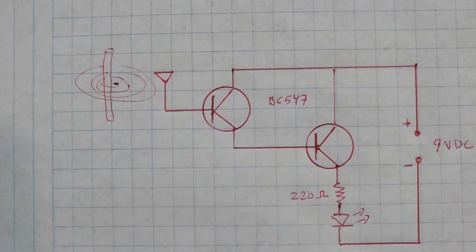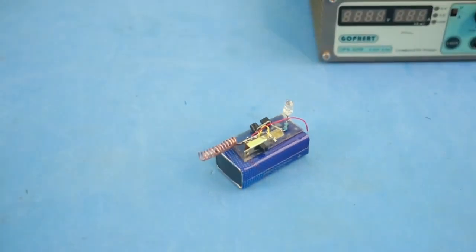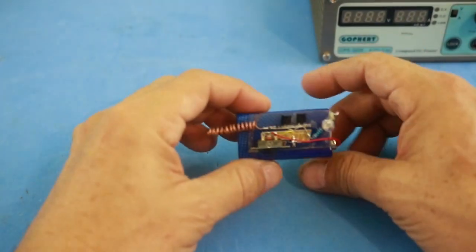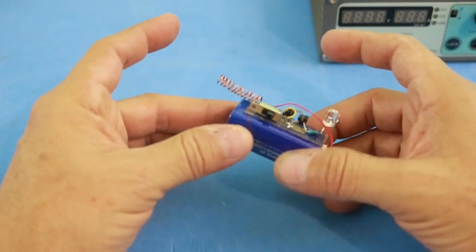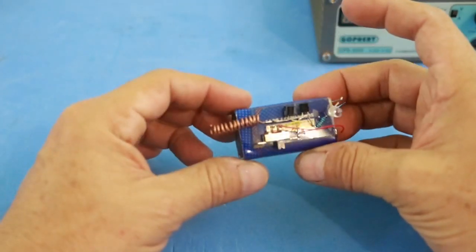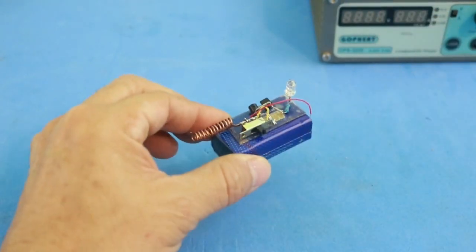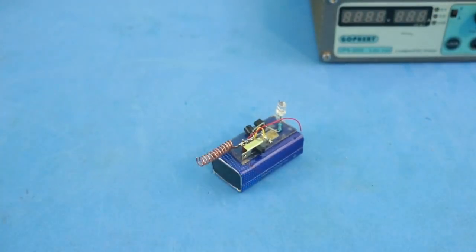And we will make one of those in a forthcoming video. Okay, that's all for today. A very simple circuit to check for the presence of alternating current without direct contact. I hope you liked the video. Thanks for visiting my channel and see you in the next one.